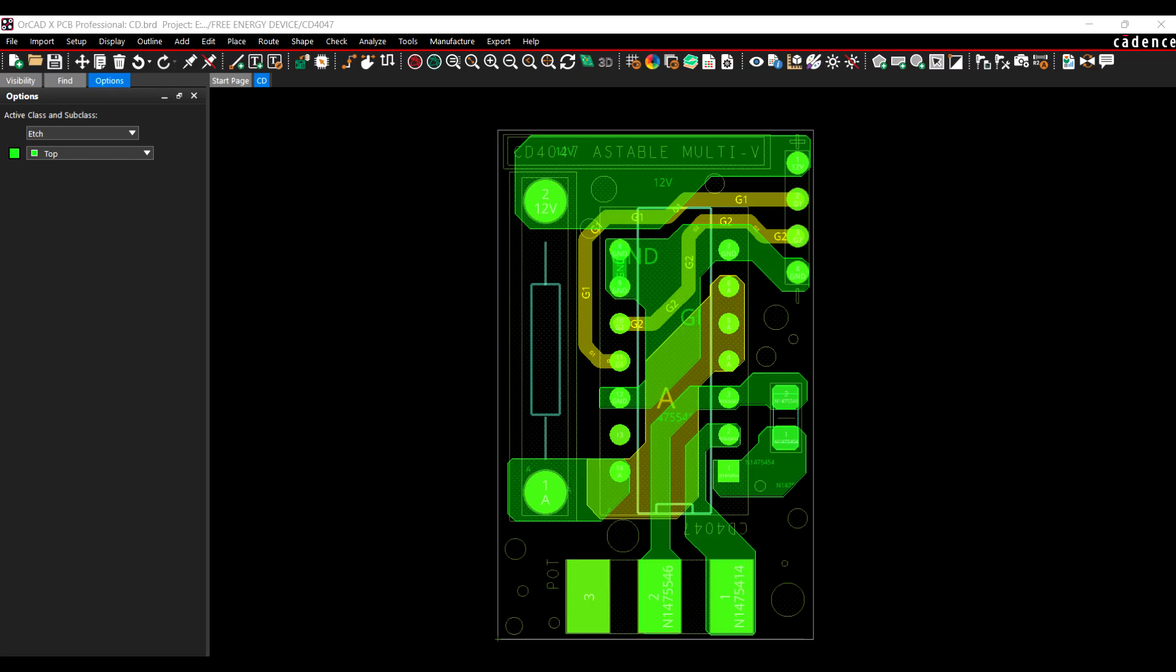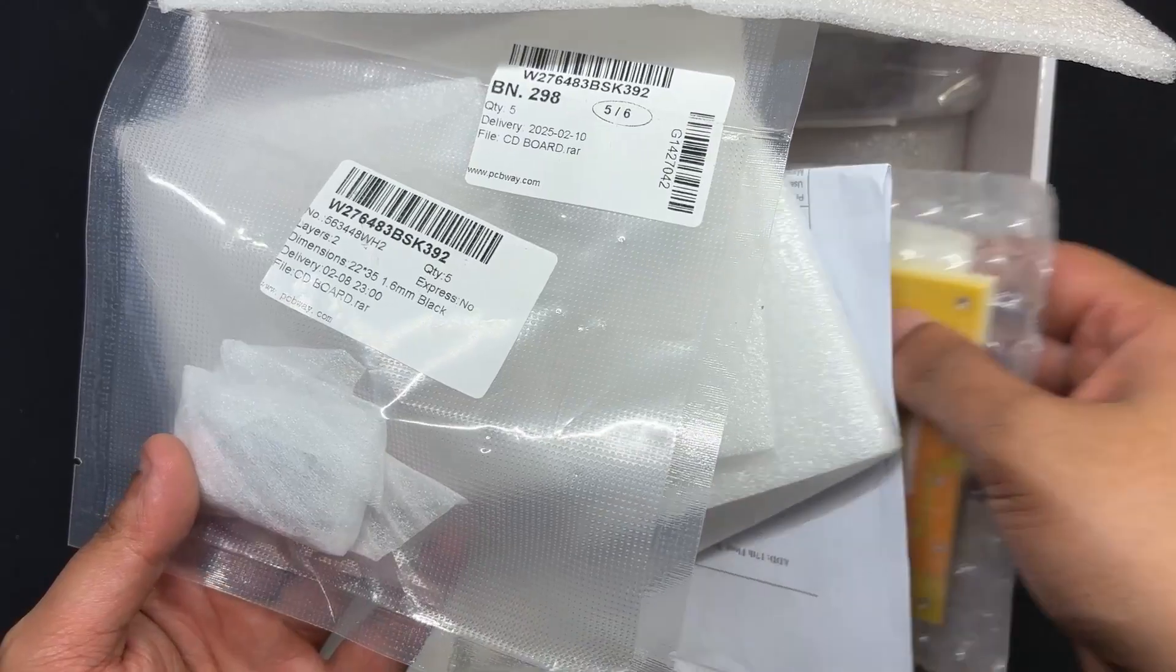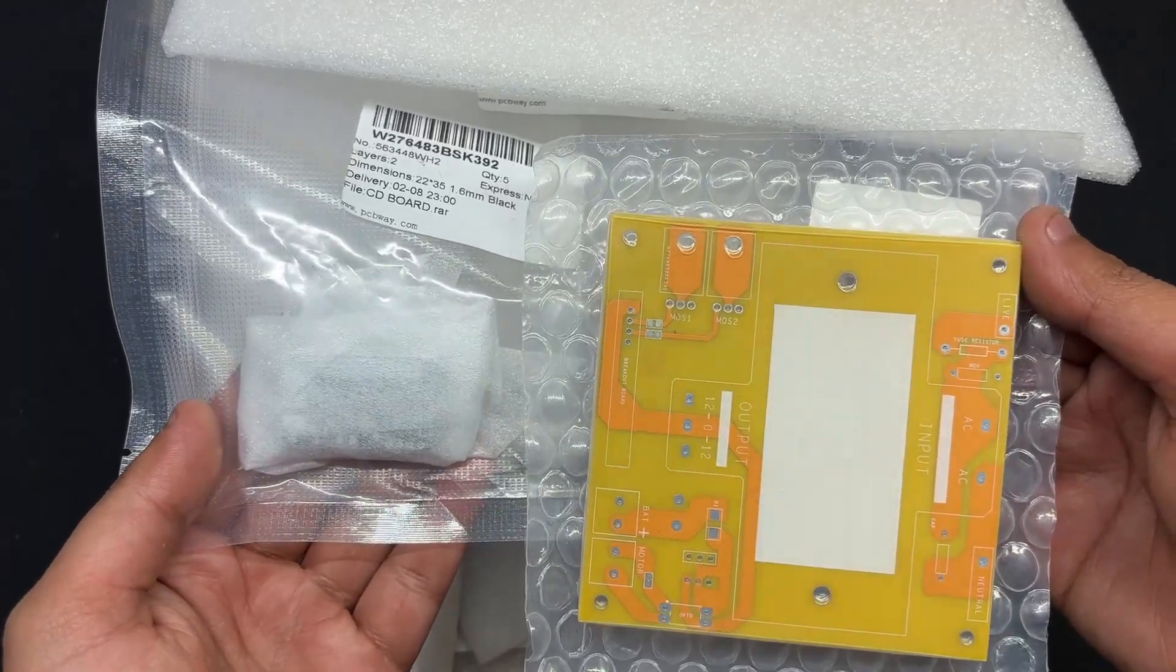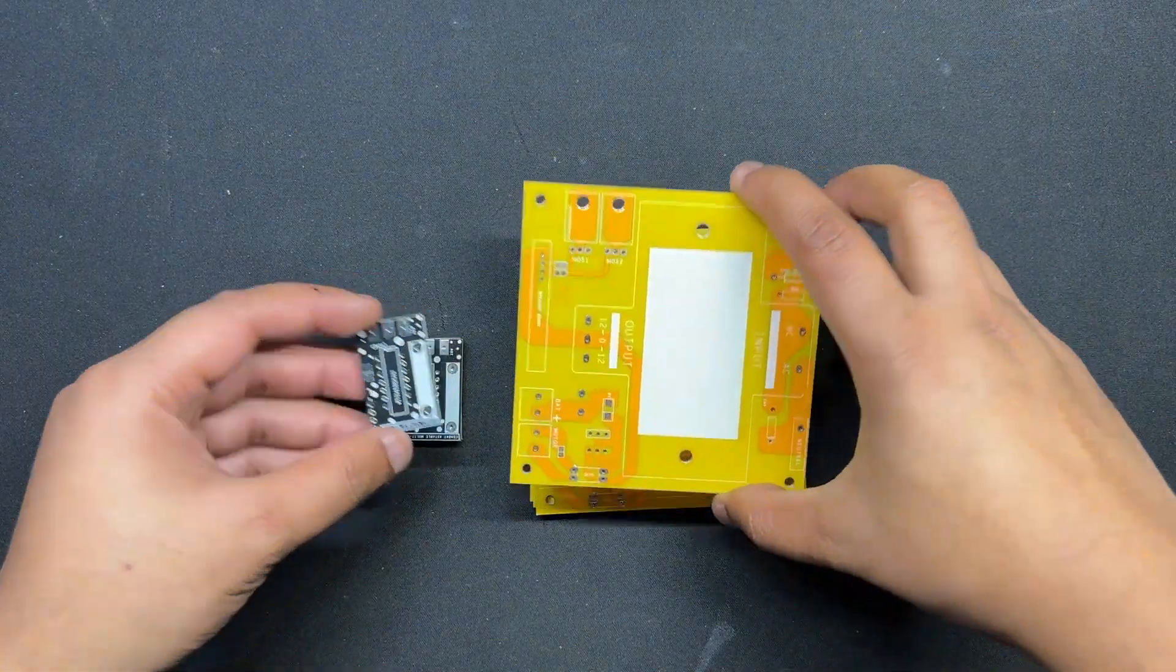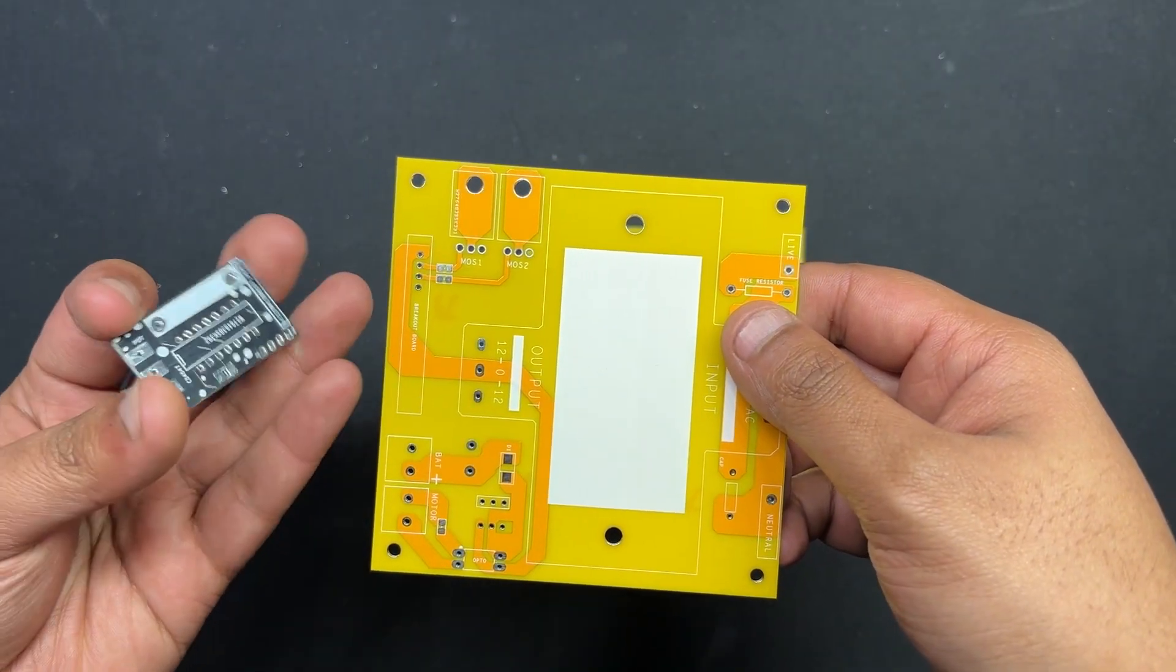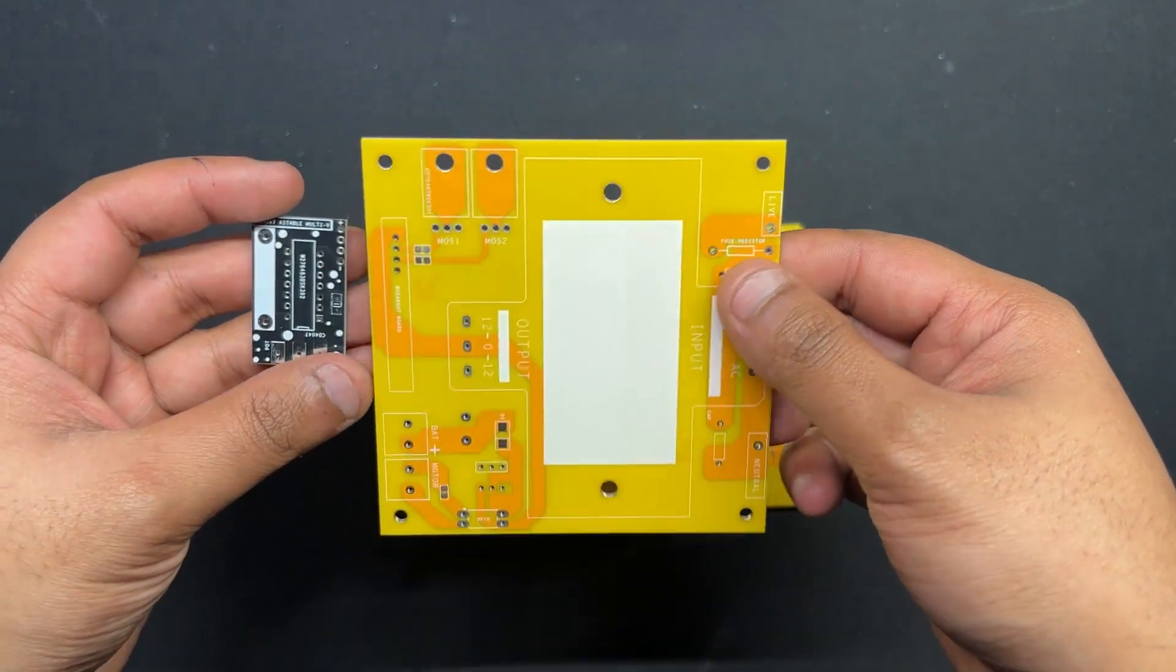We created two PCBs for this project: the CD4047 driver and the MOSFET board. Two orders were placed, one for the CD4047 driver and one for the MOSFET board. The CD4047 driver board was ordered with black solder mask and white silkscreen and the MOSFET board was ordered with yellow solder mask and white silkscreen.